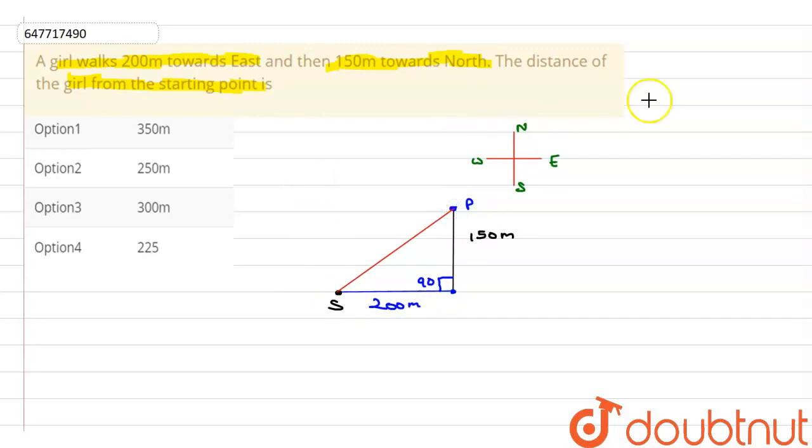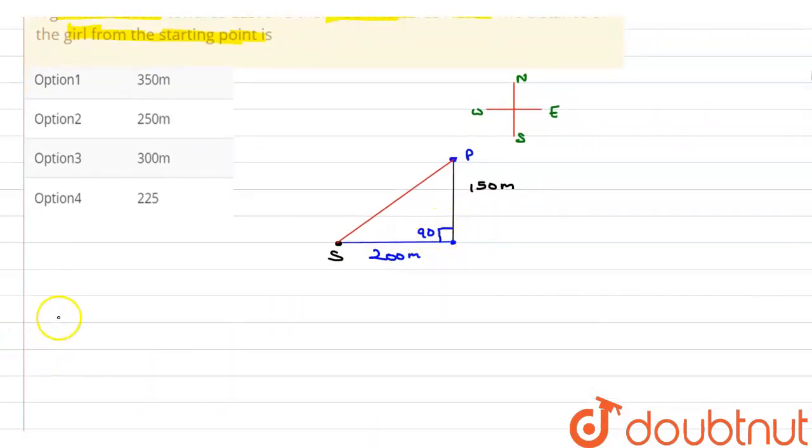So here we can say that it is basically 90 degrees. So we can apply Pythagorean theorem. By Pythagorean theorem, SP square is equal to SO - let's suppose this is O - SO square plus OP square.